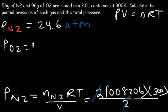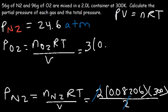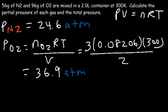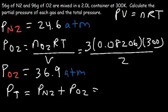Now let's calculate the partial pressure of oxygen using 3 moles of O2. The equation is moles of O2 times R times T divided by V: 3 moles times 0.08206 times 300 Kelvin divided by 2 liters, giving 36.9 atm. Using Dalton's law, the total pressure is the sum of the two partial pressures: 24.6 plus 36.9 equals 61.5 atm.